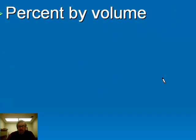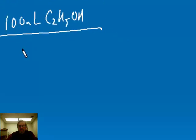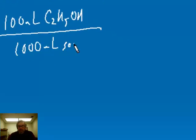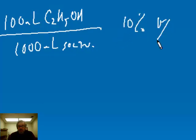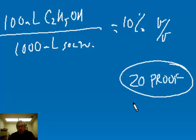Another concentration unit is percent by volume, sometimes labeled percent V/V. This is the ratio of the volume of a liquid solute to the total volume of the solution. For example, 100 mL of ethanol (C₂H₅OH) in 1000 mL of solution is 10% by volume. Proof ratings for alcoholic beverages are double the volume percent of ethanol, so this example would be 20 proof.